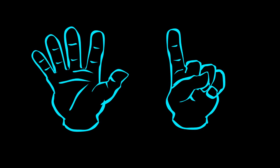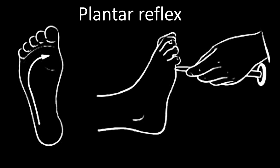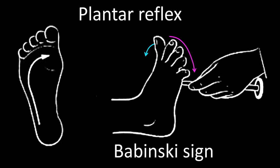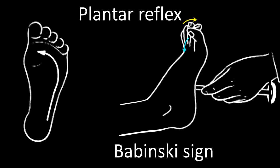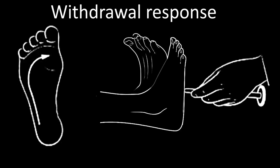The sixth primitive reflex — the one regularly tested during motor examination — is the plantar reflex. It is elicited by stimulating the plantar region. The normal response is flexion of the toes, implying no Babinski. An abnormal result is a Babinski sign: extension of the big toe and either fanning or flexion of the other toes. Be careful: if all toes extend and the foot dorsiflexes, it is a withdrawal response and not a Babinski sign.